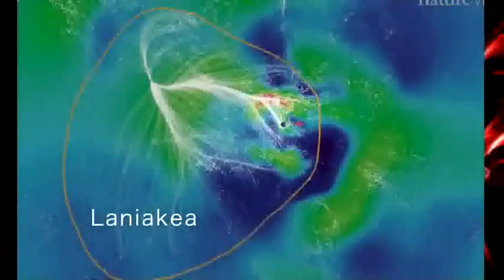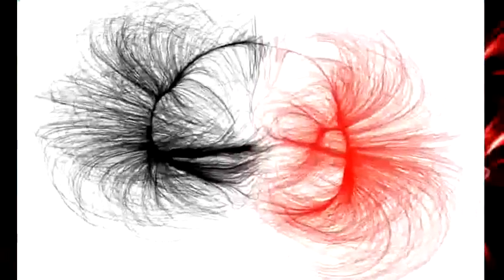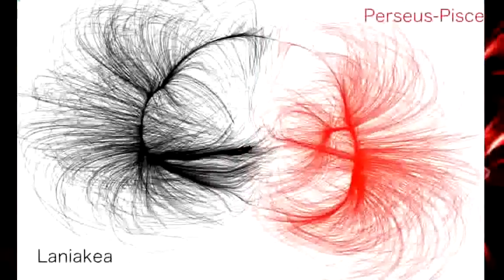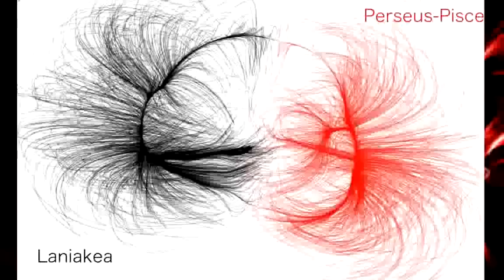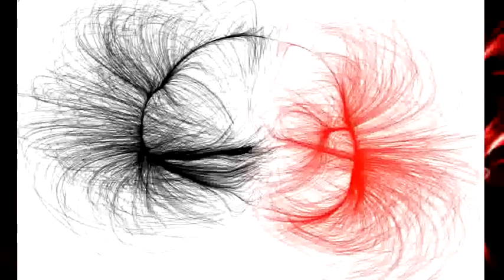But how did the team know how to redraw the boundaries of this cosmic map? Here's our supercluster in black, and a neighbouring structure, Perseus Pisces, in red. Scientists defined the boundary as the points where the flows of galaxies diverge, like water dividing at a watershed. This is where neighbouring structures shear apart.